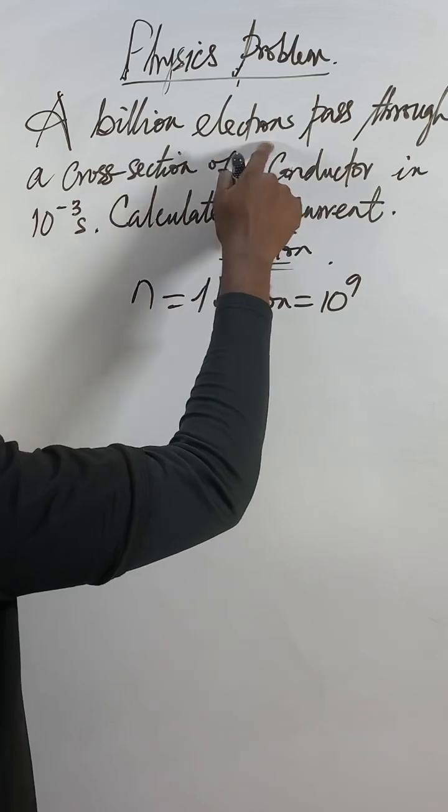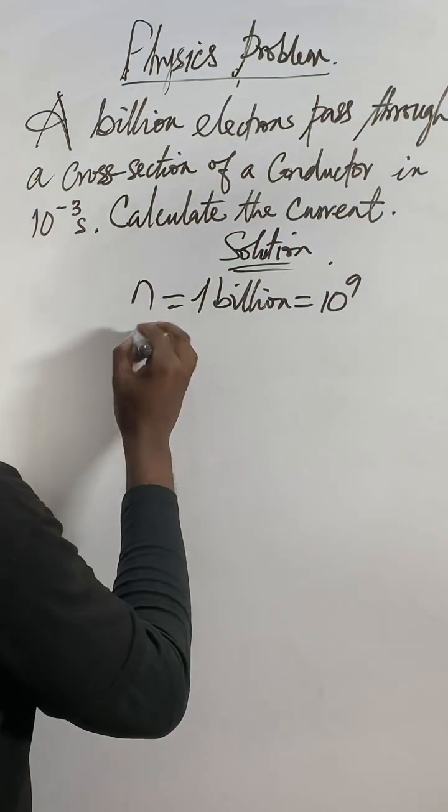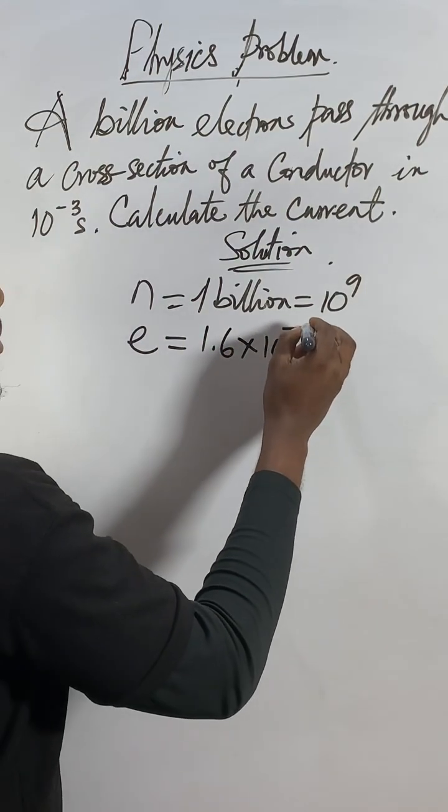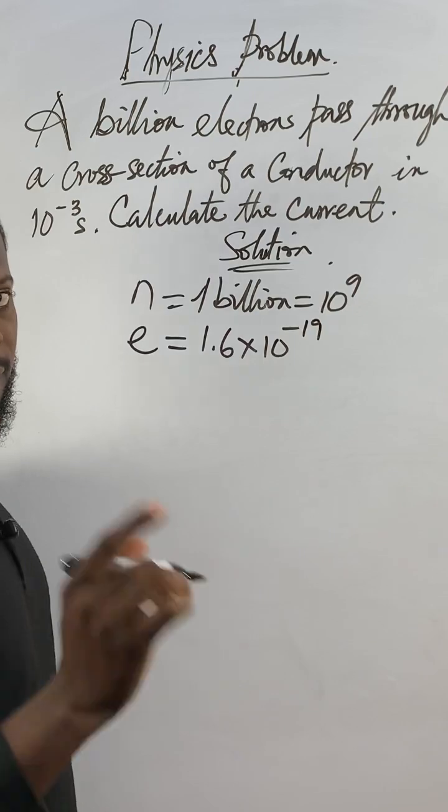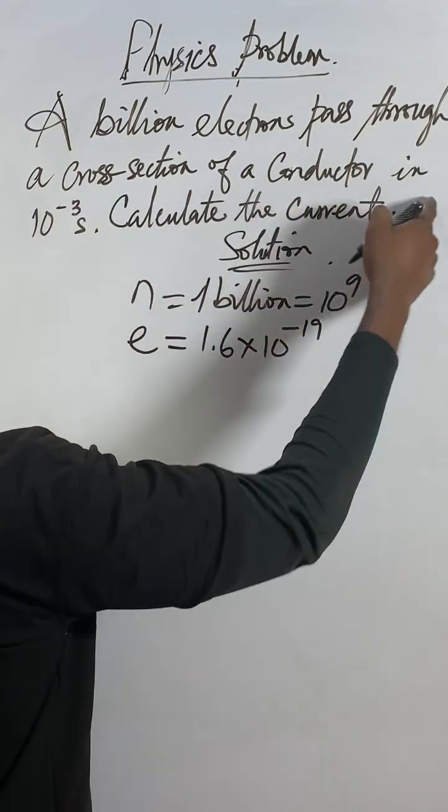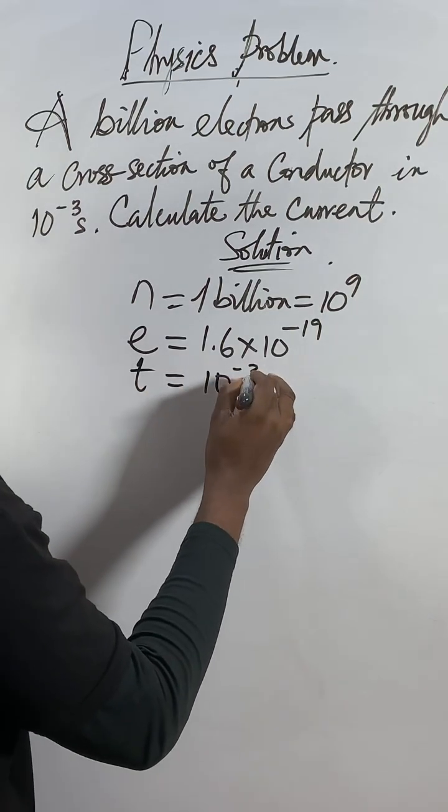Then, we talk about electrons. Electrons have charge. The charge on one electron is 1.6 times 10 to the power of negative 19. They say the electrons pass through a cross section of your conductor in 10 seconds, they give you time equal to 10 to the power of negative 3 seconds.